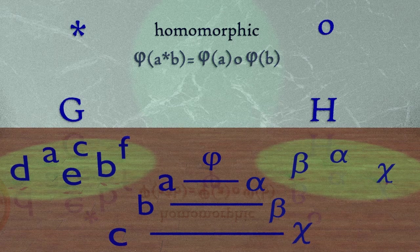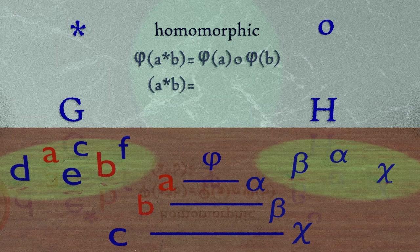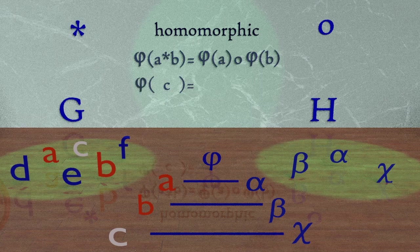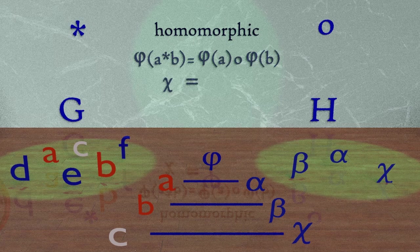On the left, as we perform the star operation on the set G, let's have A star B equal to C. And then if we take our function phi on the left, we can see from below that our phi map will take the element C and map that to the element chi.